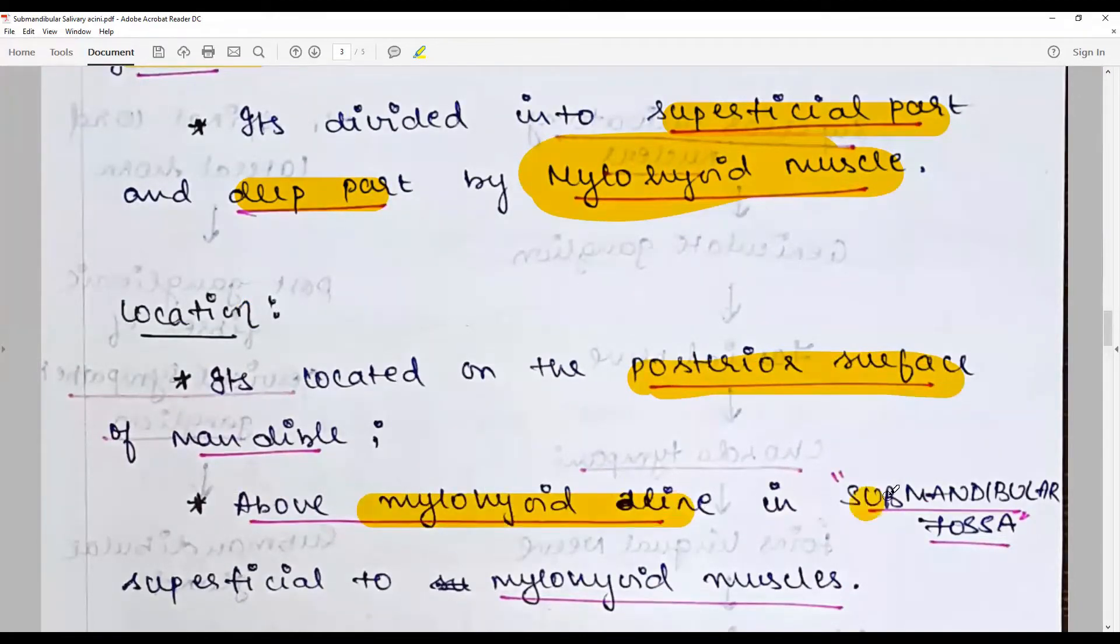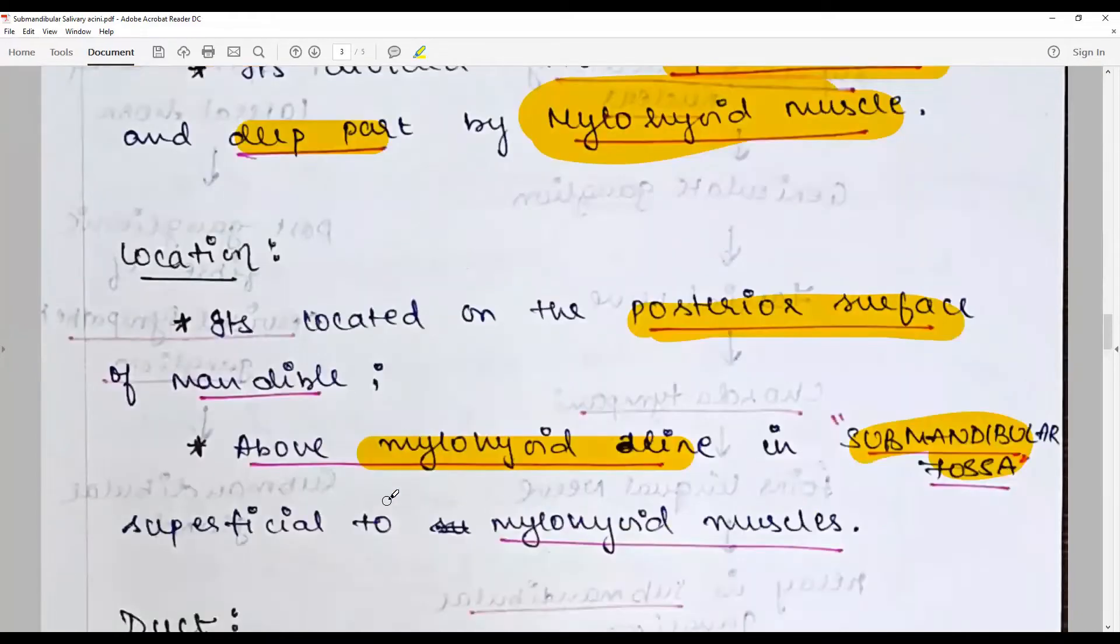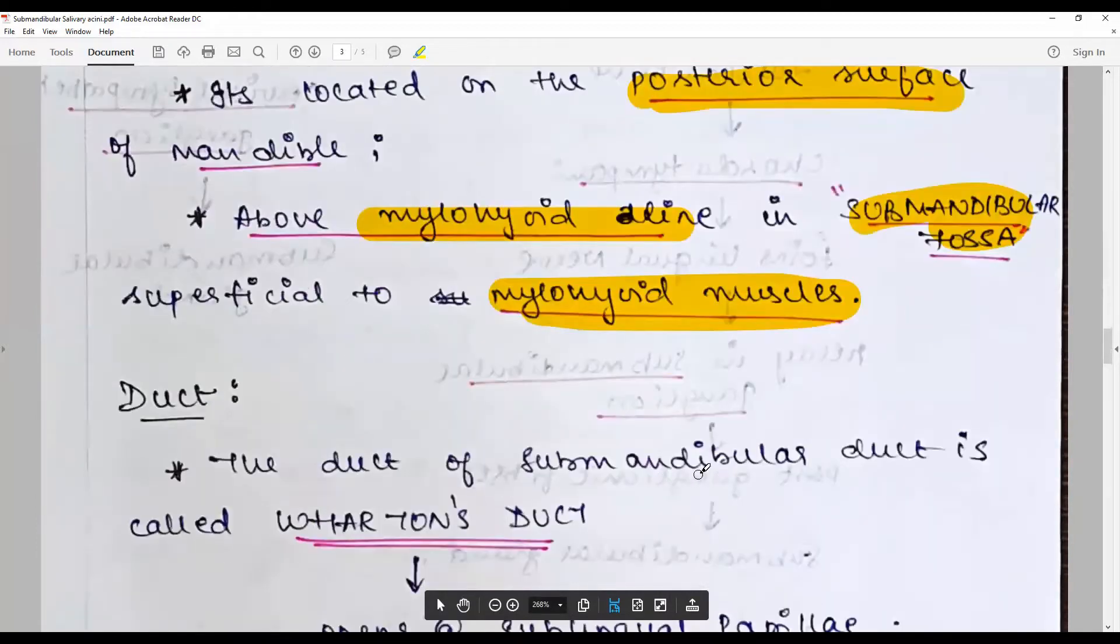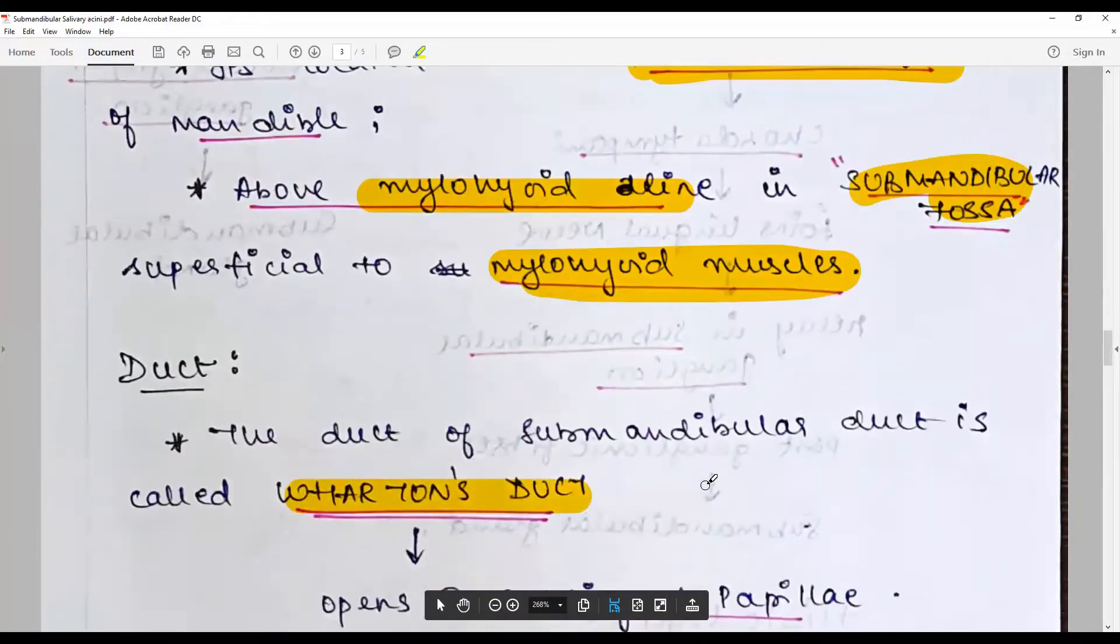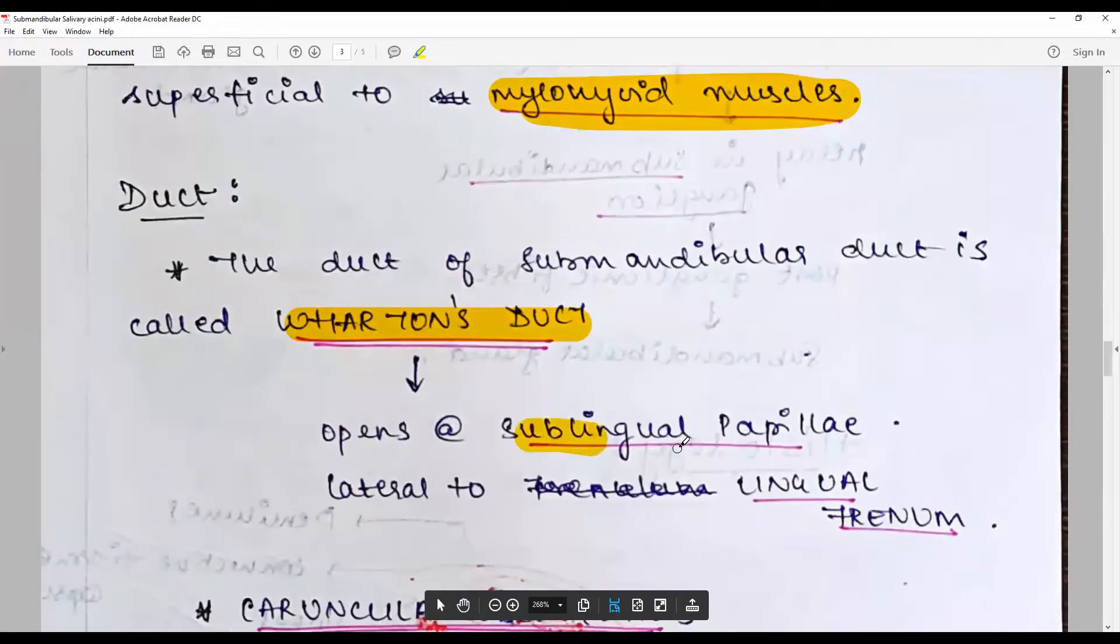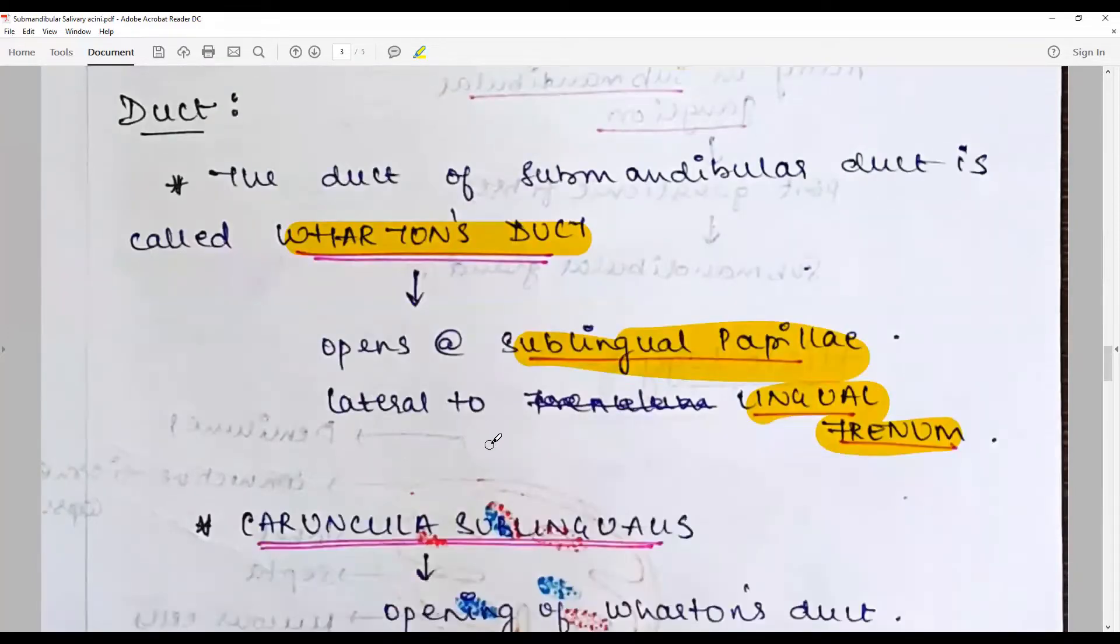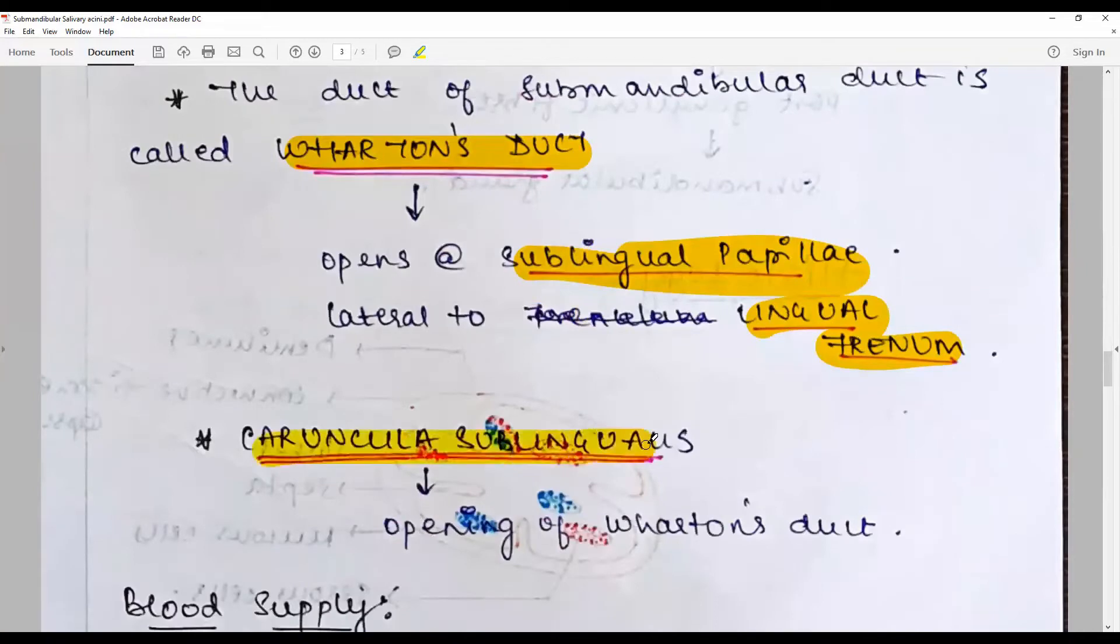The duct of the submandibular gland is Wharton's duct, which opens into the sublingual papilla lateral to the lingual frenum.